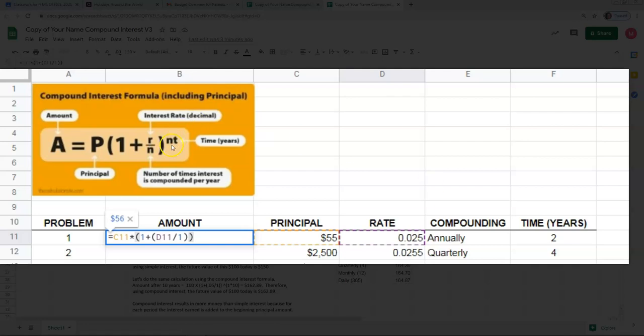And then it's time to raise it to this power of N times T. And that calculation we will put in parenthesis and once again is the number of time periods. So we know that it's one because it's annually. And then we're going to multiply that by the number of years, which is right here. So we can click that directly and then enclose that in parenthesis.